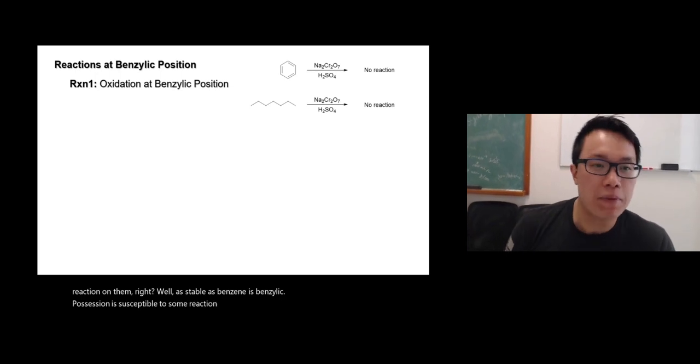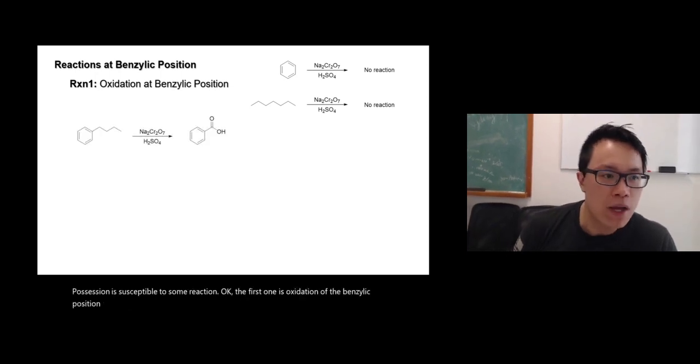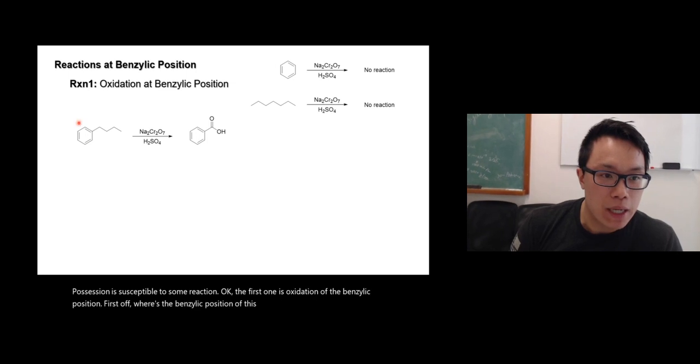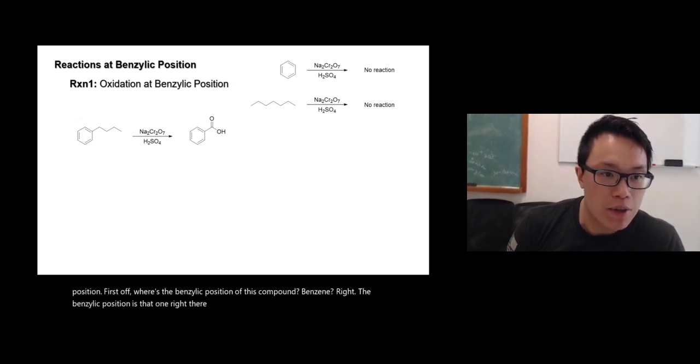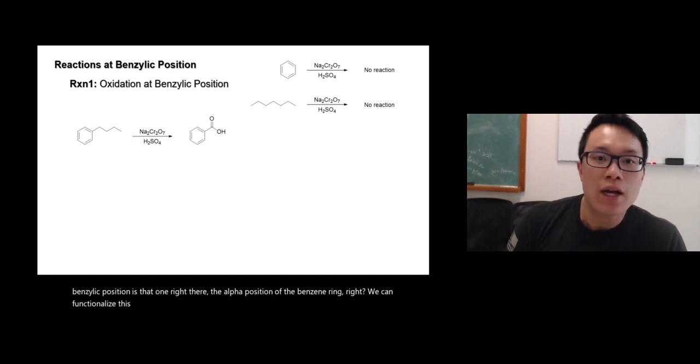The first one is oxidation of the benzylic position. First off, where's the benzylic position of this compound? The benzylic position is that one right there, the alpha position of the benzene ring. We can functionalize this carbon.